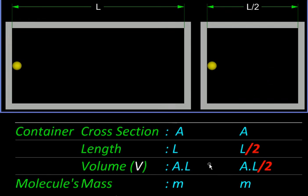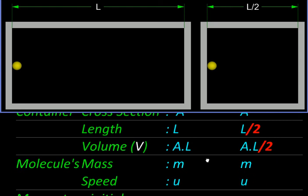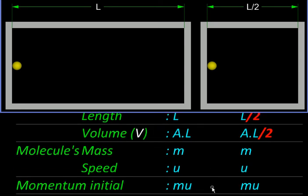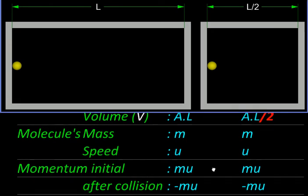So the volume here will be AL, volume here will be AL upon 2, half the volume. A molecule of the same mass M is contained in both of them moving with the same speed U, and therefore it will have identical momentum, both of them M into U.